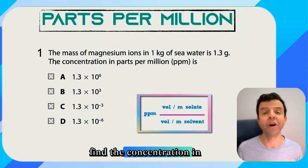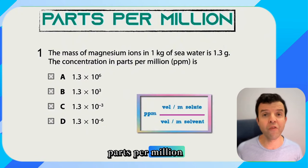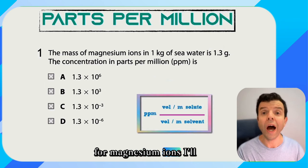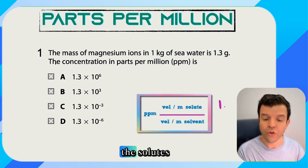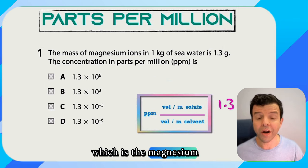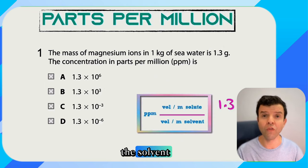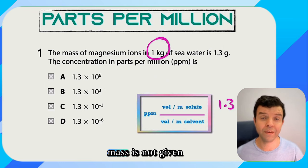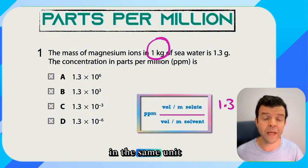In this example I find the concentration in parts per million for magnesium ions. I'll divide the mass of the solutes which is the magnesium ions over the mass of the solvent but notice that the mass is not given in the same unit.